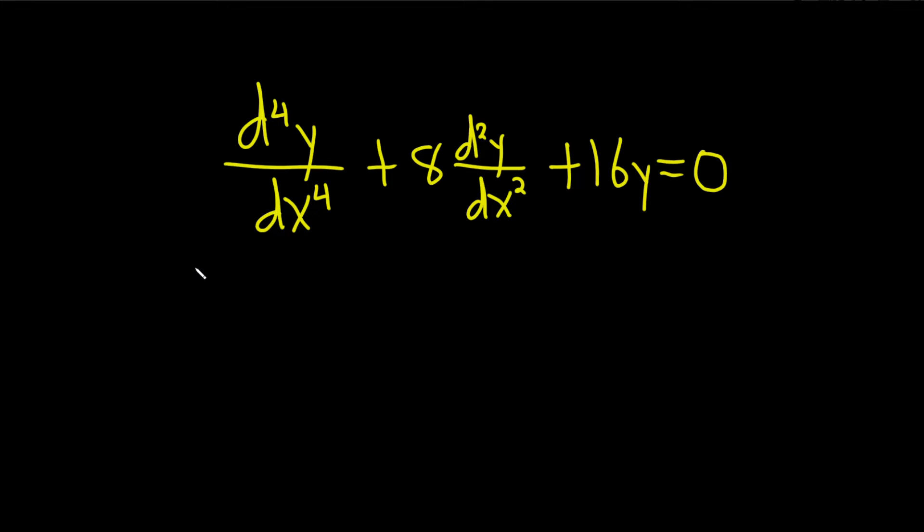So the first thing you want to do in a problem like this is write down the auxiliary equation. You look at the order of the derivative. In this case, this is the fourth derivative, so you write down m to the fourth. And then plus 8. This is the second derivative, so this is m squared. And then plus 16. And then think of y as the zero-th derivative. That would just be m to the zero, so you don't have to write it.